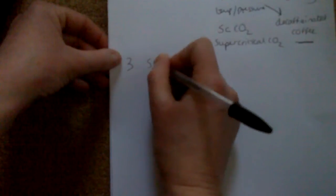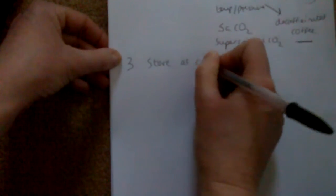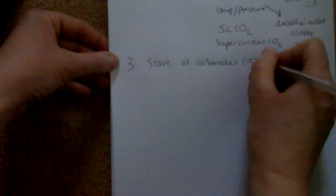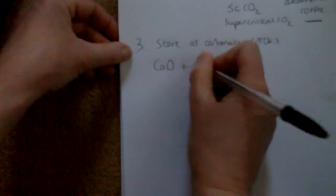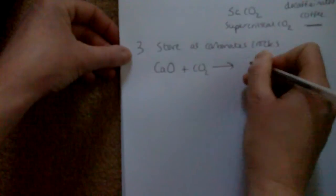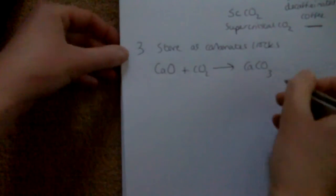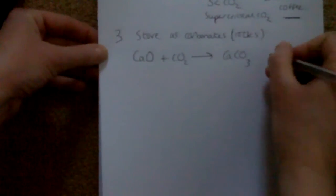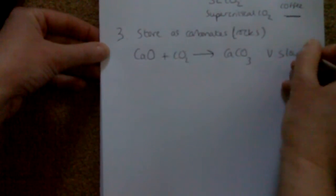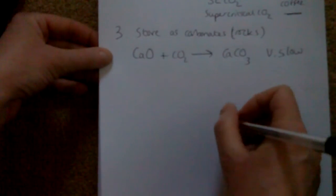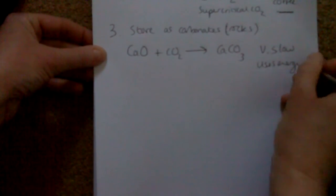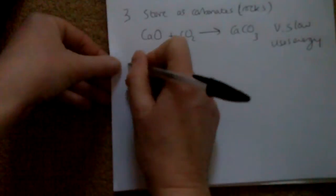Number three: why don't we store CO2 as carbonates — as rocks? For example, we could react CO2 with calcium oxide and turn it into calcium carbonate and store it as a rock. However, this is not a very good method of reducing CO2 in the atmosphere because it's very slow and it uses energy.